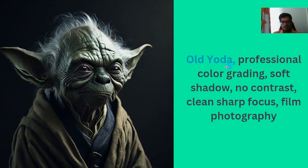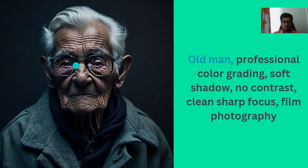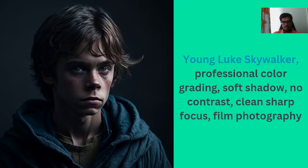Let's look at a few samples. The subject here is 'old Yoda' with professional color grading, soft shadow, no contrast, clean sharp focus, and film photography — this is the kind of output Leonardo currently generates. If I change the subject to 'old man' with the rest of the prompt the same, you can see how hyper-realistic the photo is. Changing the subject to 'young Luke Skywalker,' this also looks like a real image of a person.